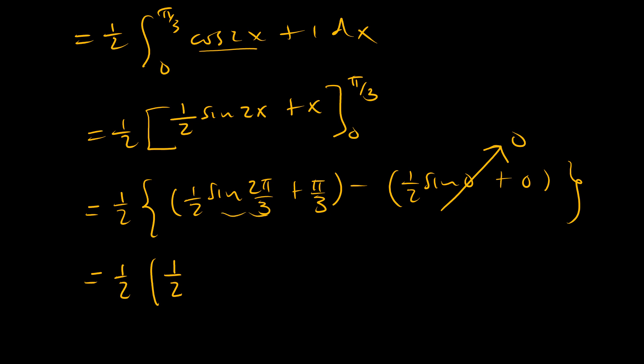So we have sine of 2 pi over 3 is square root of 3 over 2, plus pi over 3.